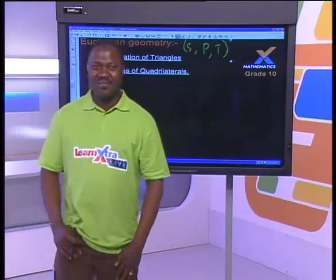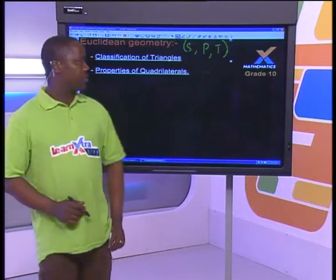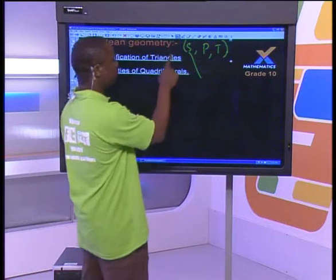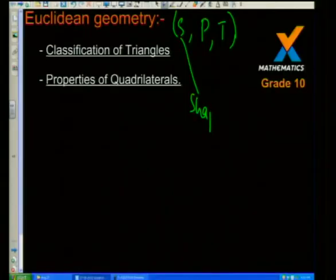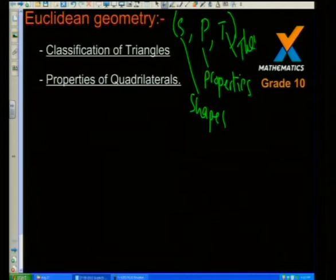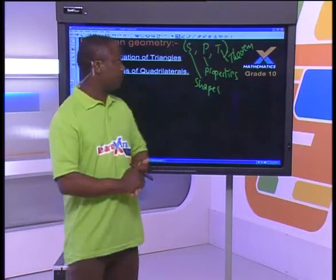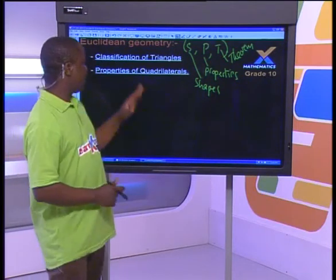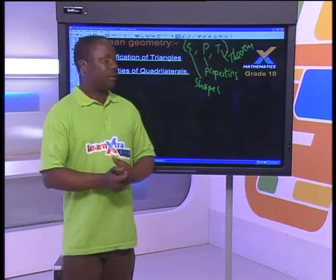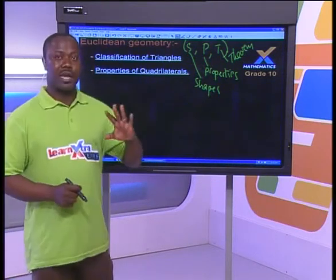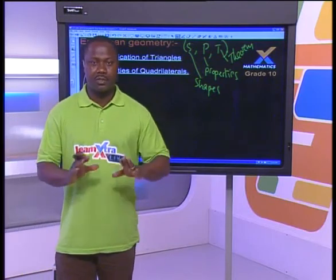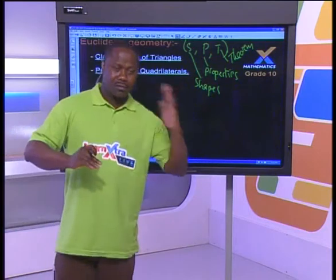We are doing Euclidean geometry today. What we will be interested in, because it's geometry, is shapes and properties of those shapes. And normally you also find some kind of generalization about those shapes — theorems are basically generalization statements. I am going to focus on two things: classification of triangles and properties of quadrilaterals. The language I will use will be the language of talking about sides and angles.